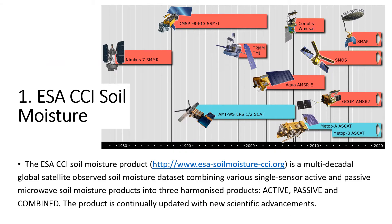For those not yet familiar with the project, ESA CCI soil moisture is part of the European Space Agency's climate change initiative program through which it is funded. The product is a global long-term satellite-based multi-sensor soil moisture data set. There are three separate harmonized data sets produced within the project: active, passive, and combined. Those are continuously updated with data from additional sensors and scientific improvements to the soil moisture retrieval algorithm as well as the subsequent merging scheme.